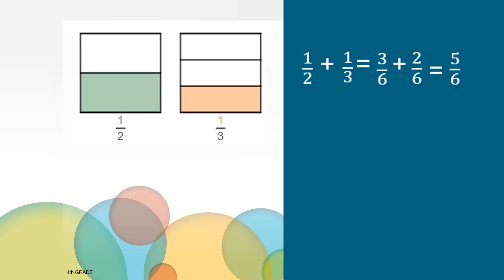You can also use what you know about multiples to find common denominators. On your paper, list the multiples of two — that means count by twos — and the multiples of three — that means count by threes. Look for any numbers that they have in common. After you've written your list, we can see that both sets of multiples have a six. We call this the least common denominator because it is the smallest number that they have in common.